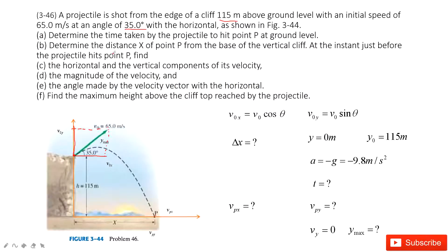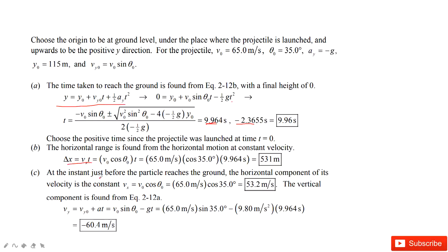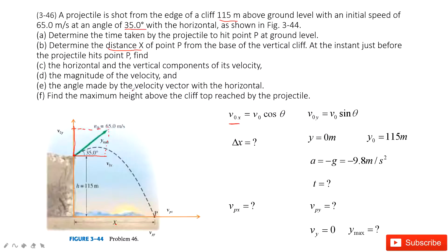The next part asks you to determine the range — the horizontal distance x of point P. In projectile motion, the velocity in the x-component is constant because there is no acceleration in the x-component. The initial velocity in the x-component is given, and we know time t, so the displacement in the x-component is Vox times t.